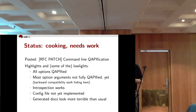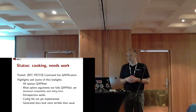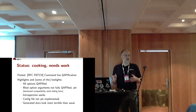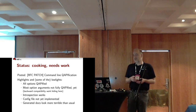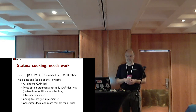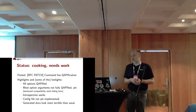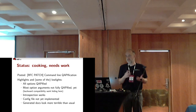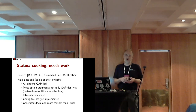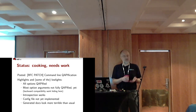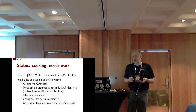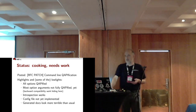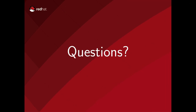Where do we stand with this work? I've posted an RFC patch; here are the highlights and some of the lowlights. All options are QAPI-fied — they are all defined in the QAPI schema and the old means to define command line options are gone. Most option arguments are not fully QAPI-fied yet, and QAPI-fying them will be a lot of work including a lot of backward compatibility work. Introspection works — it's currently meshed together with QMP introspection because that was easiest; we may want to separate the two or maybe not. Configuration files are not yet implemented but they should be straightforward. And finally, at this stage the generated documentation looks even more terrible than usual.